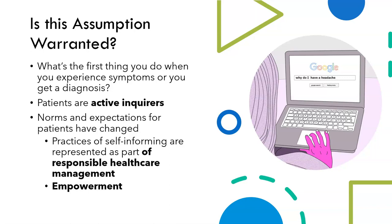The norms and expectations for patients have changed pretty dramatically over the last few decades. It used to be the case that this information was the purview of medical professionals — they were the ones who went to med school, who had access to medical journals, who could keep up on cutting-edge research. But that's not so much the case anymore. The internet and cable news have changed this dramatically. We all have access to this sort of information, and in fact we're all expected to self-inform about our own medical conditions. Practices of self-informing are represented as part of responsible health care management. We see it, and patients tend to see it, as a form of empowerment — having this knowledge means we are not simply at the whims of physicians, and we can make fully informed decisions about our own care.